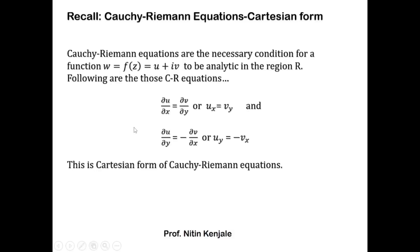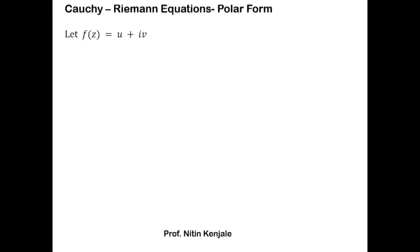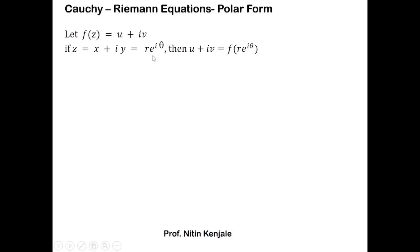This is the Cartesian form of the Cauchy-Riemann equations. Now we will talk about how to find the polar form. Assume f(z) = u + iv is an analytic function. Since z = x + iy, its exponential form can be written as re^(iθ), so u + iv can be written as f(re^(iθ)).